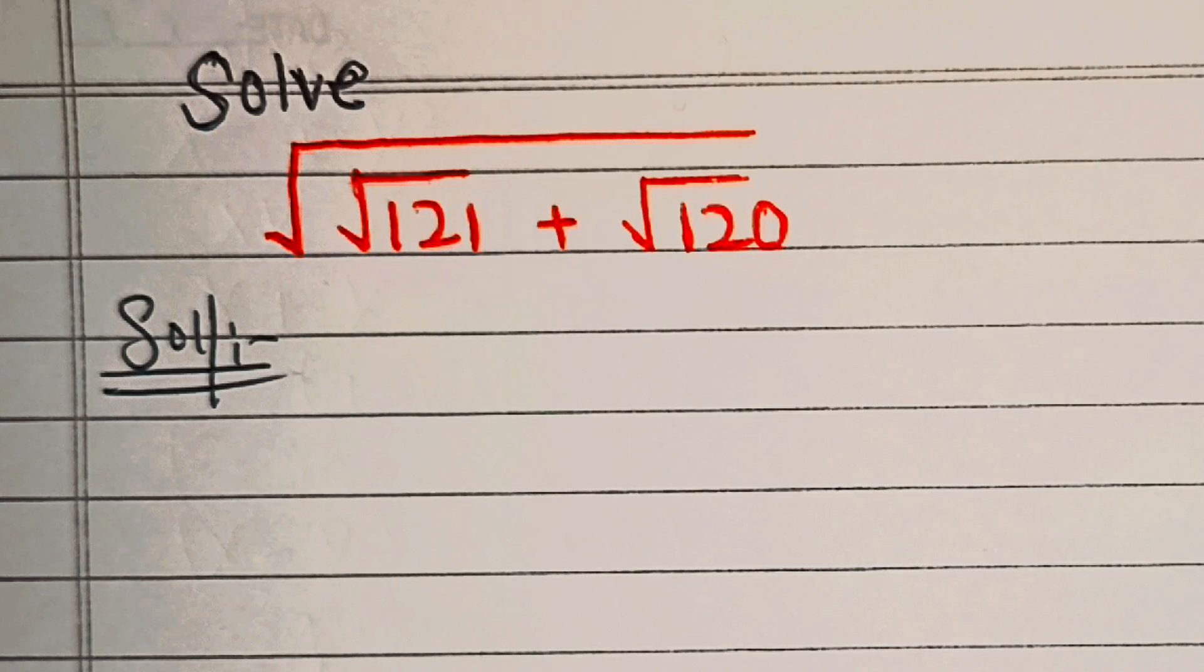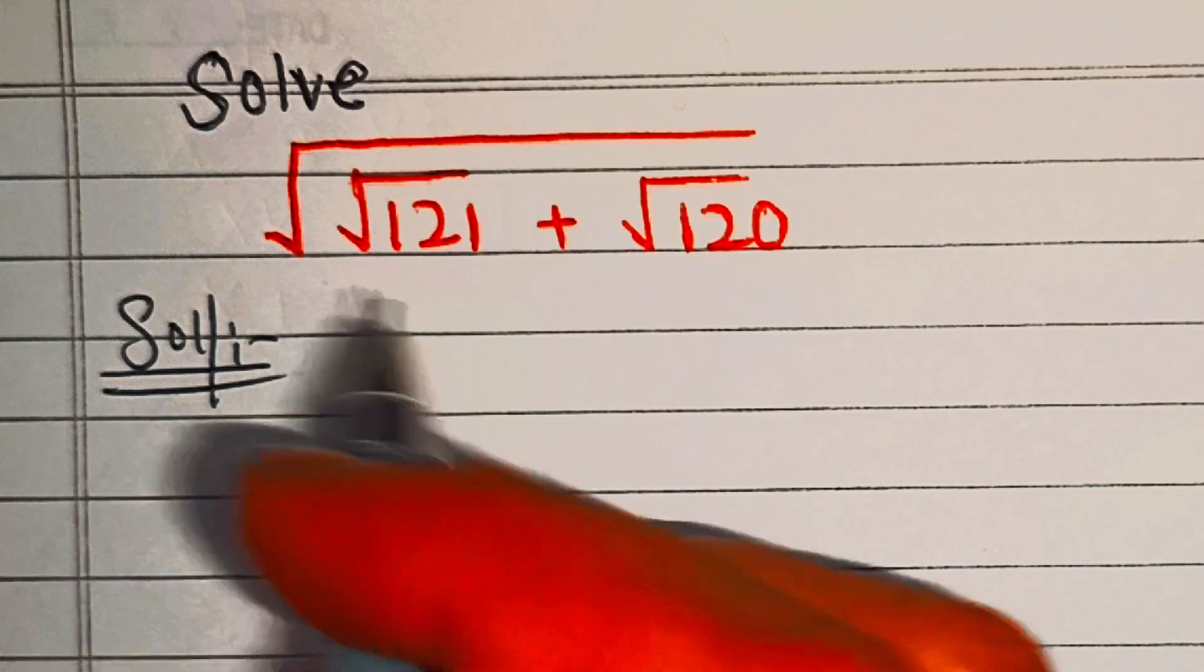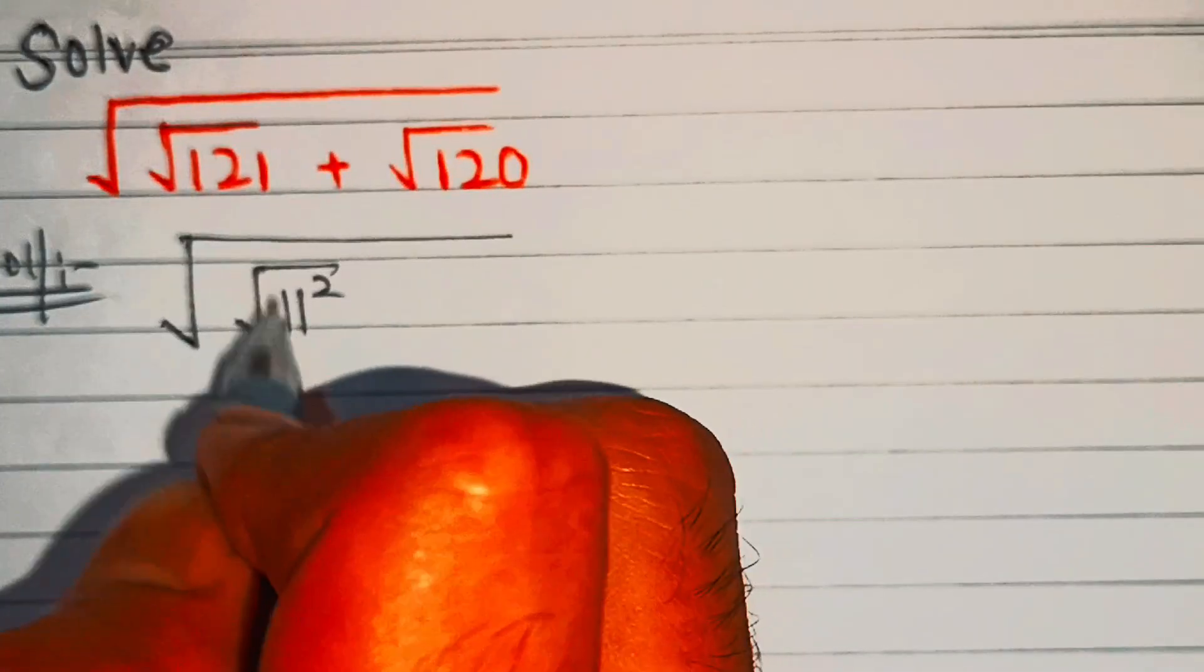Hello friends, let's solve this nice radical problem: square root of square root of 121 plus square root of 120. So let's start. We know 121...